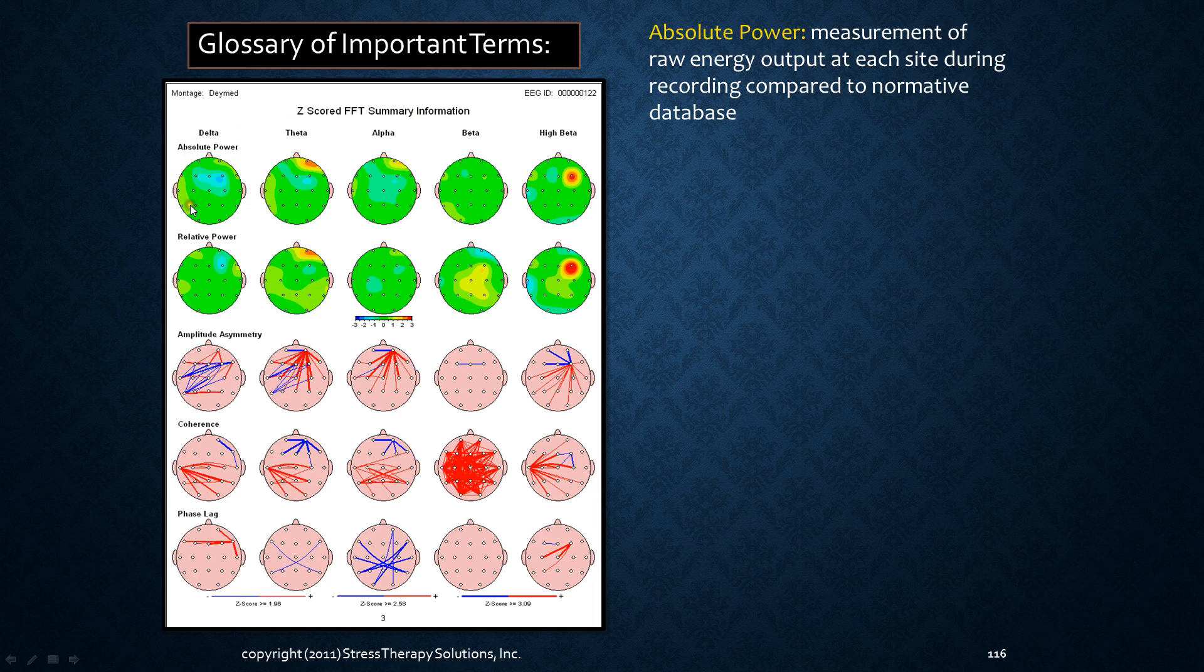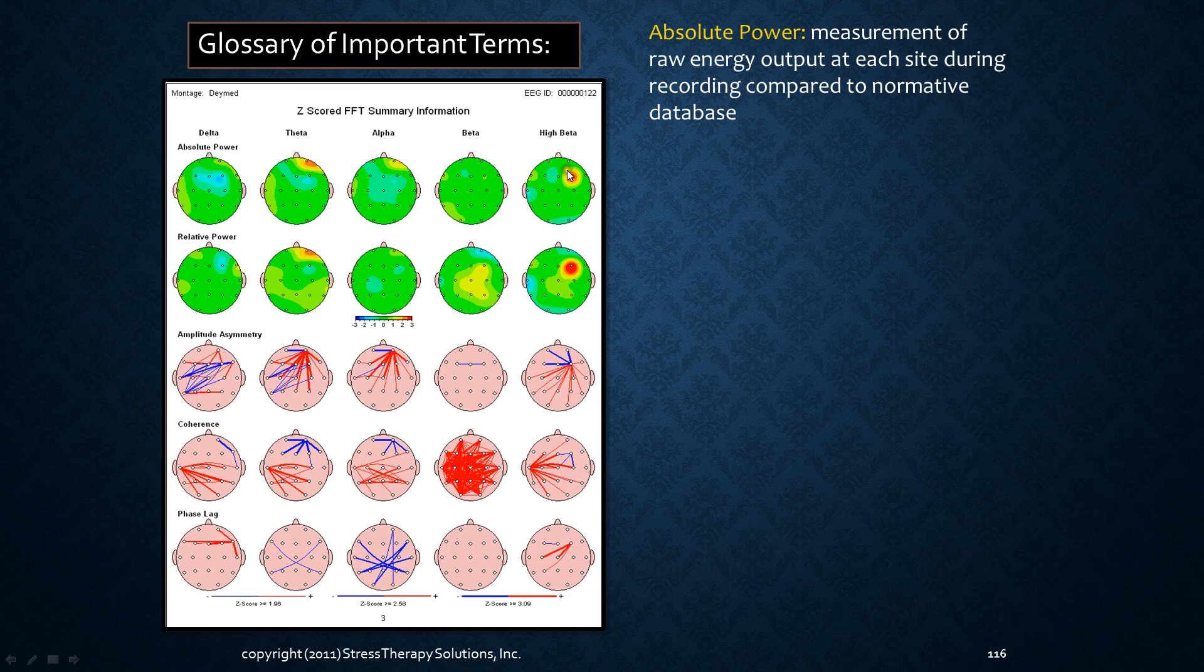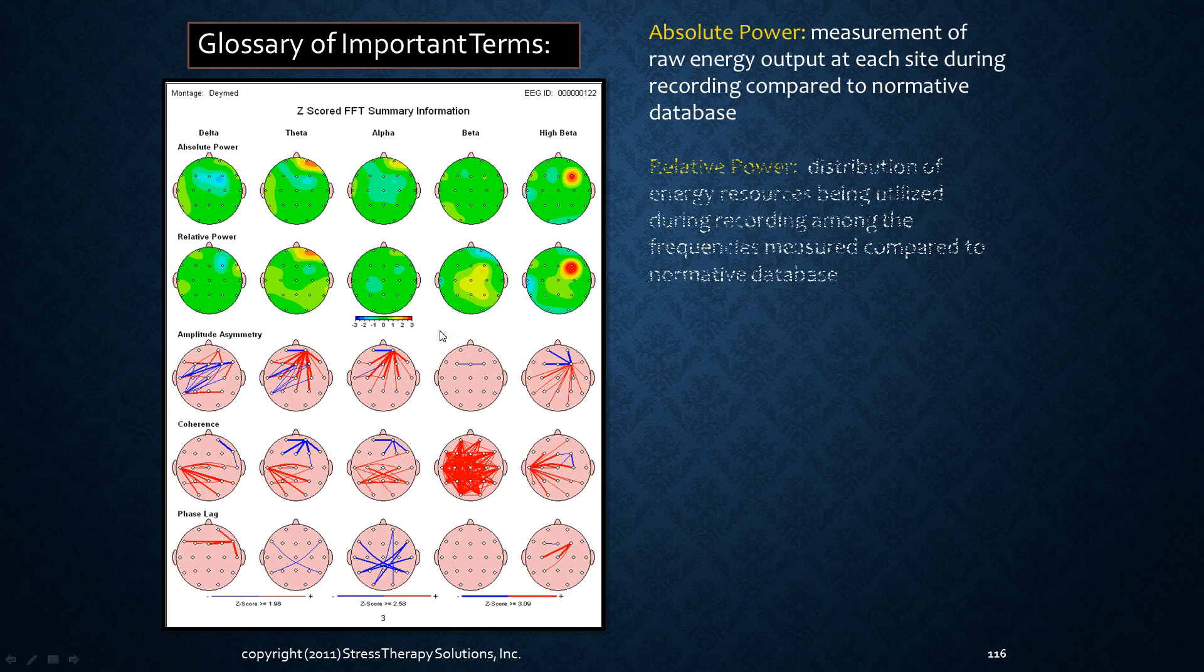So for example here we're seeing a little bit less delta activity than we would expect right here, a little more theta activity than we would expect in the frontal region, and a lot more high beta activity right here than we would expect. So that's something that we keep in mind when we're interpreting these maps. So there's absolute power.